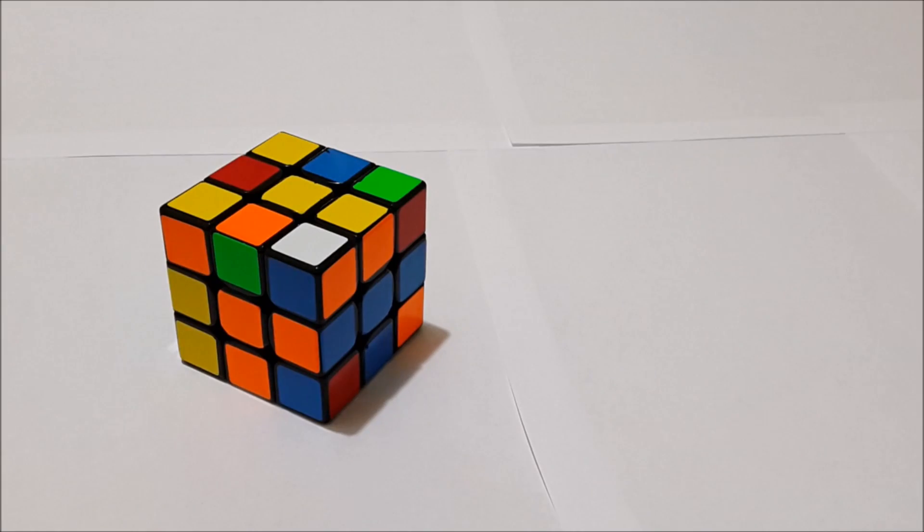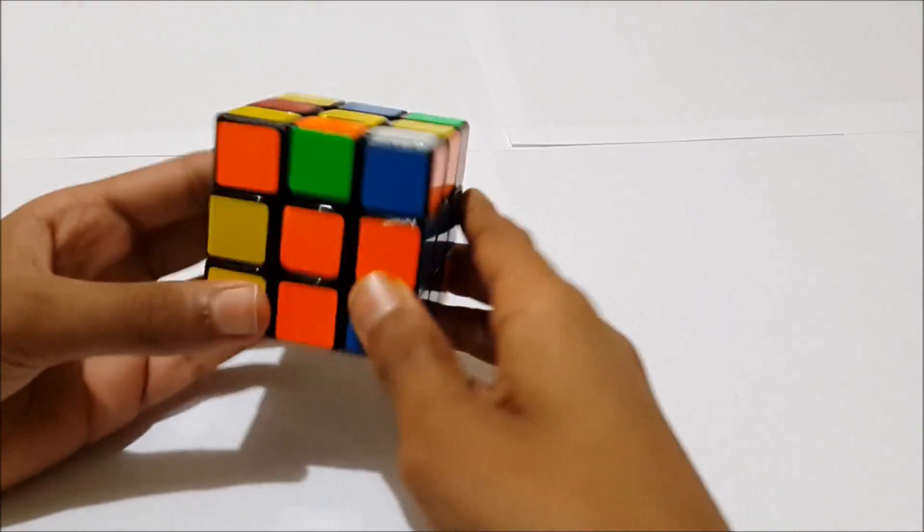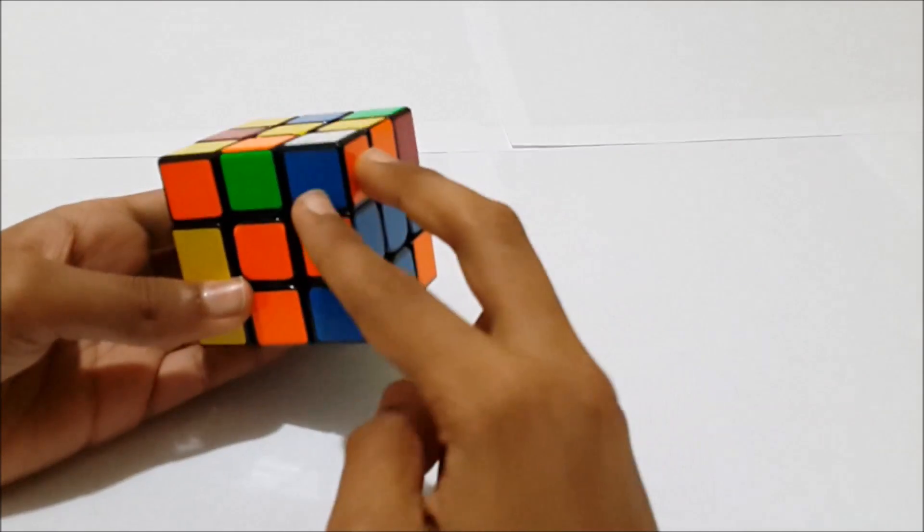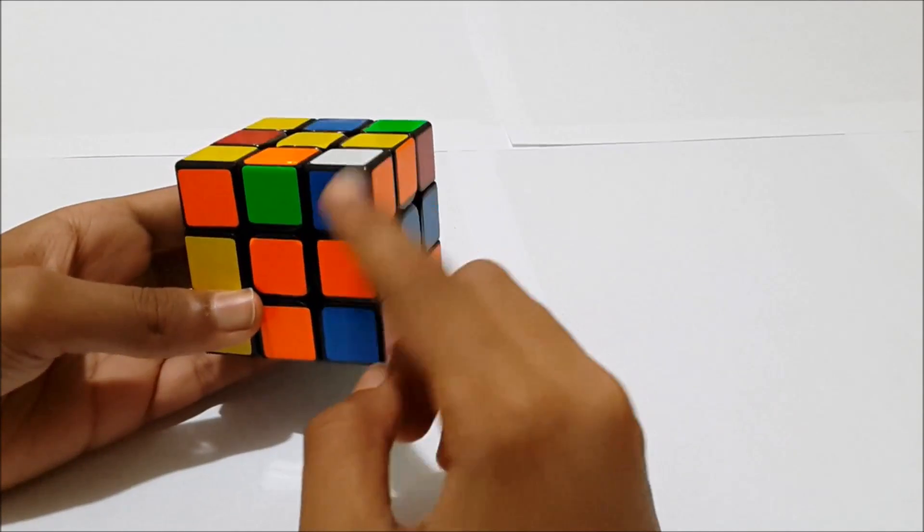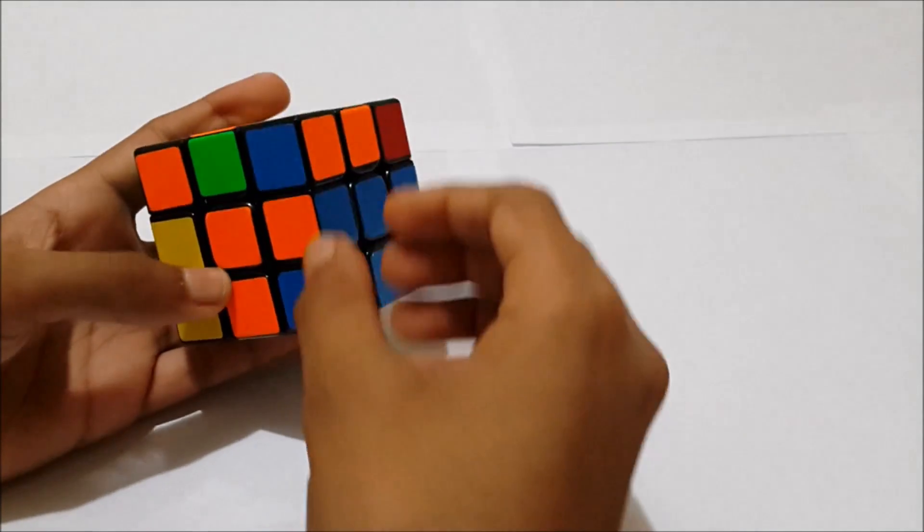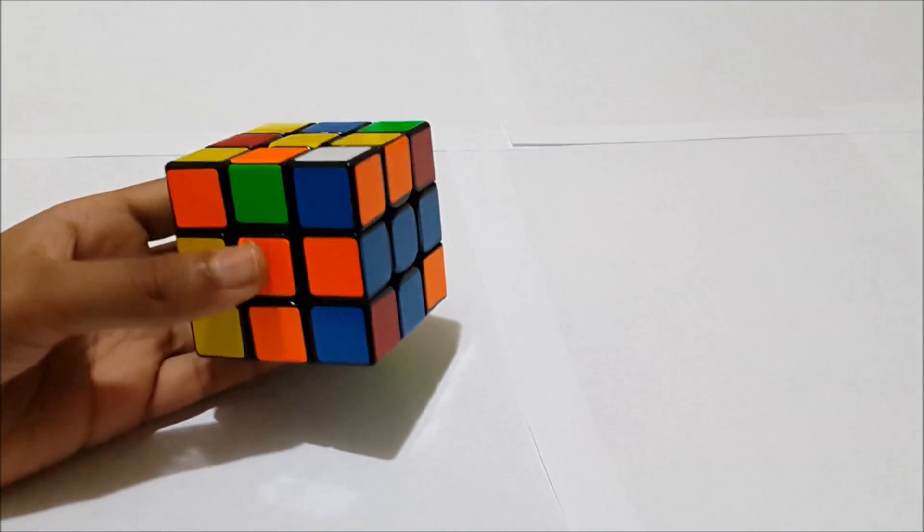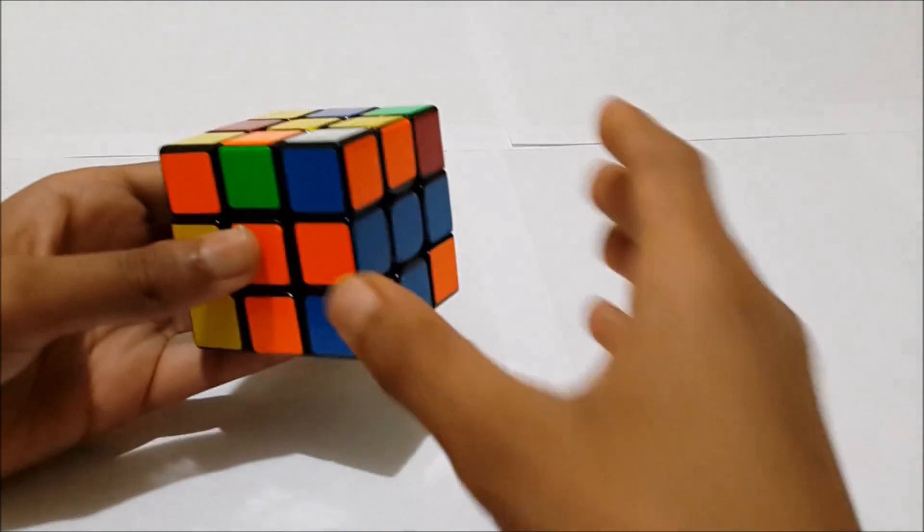Alright, so the next case is where you have an edge solved instead of a corner. And you have a corner right above it, but it's flipped, and white is on top. That might seem like a lot to remember, but I just remember that these two are opposites.